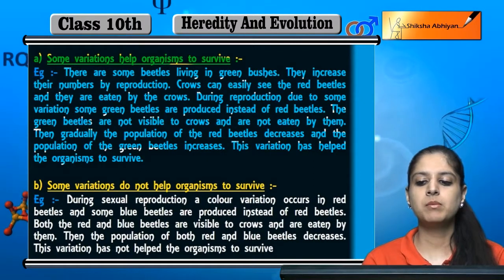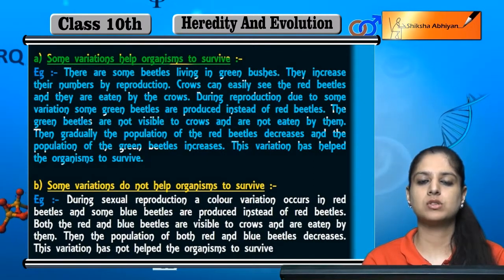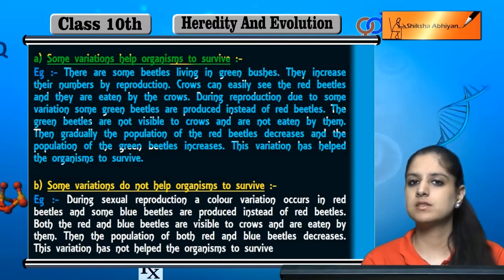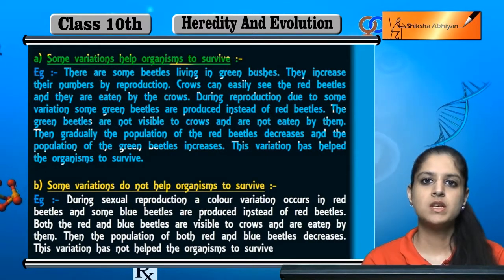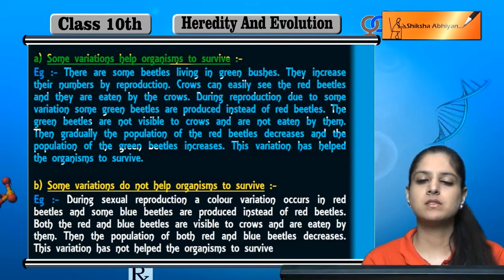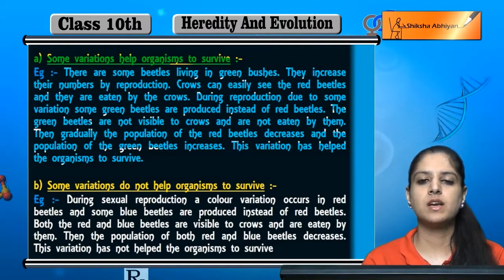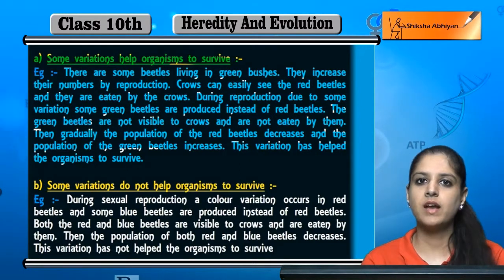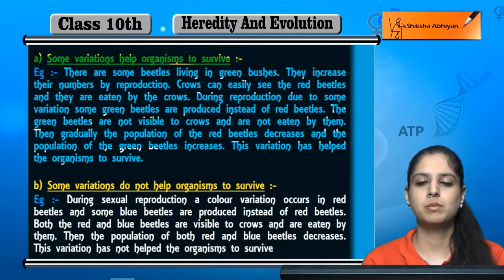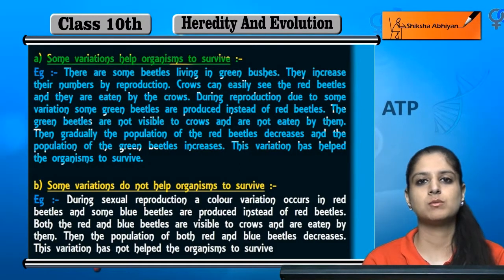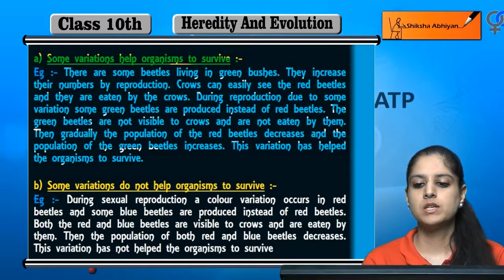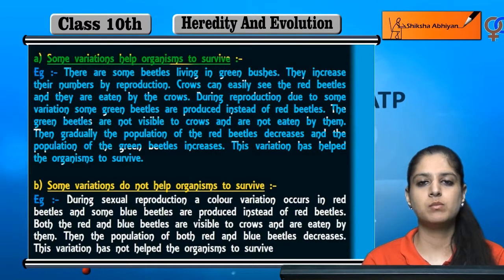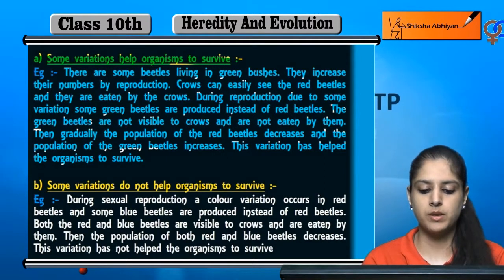Ab agar green beetles na hote, yeh variation na hota, toh sare beetles red hote, sare beetles crow kha jaate. And ultimately, beetles ki woh species khatam ho jaati. So ek species ke survival ke liye, yeh bohot important hai.